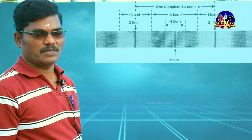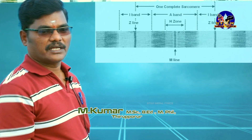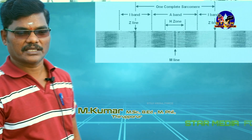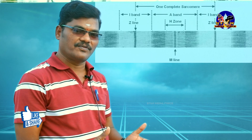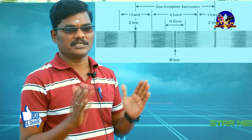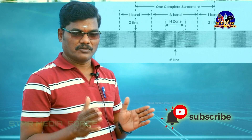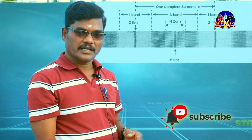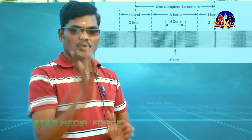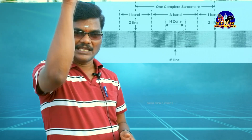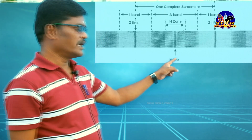The stripes are caused by the presence of actin and myosin proteins. If you look at the dark band, it also has a lighter region within it. That region is called the H zone. The H zone is bisected by a thick line called the M line.